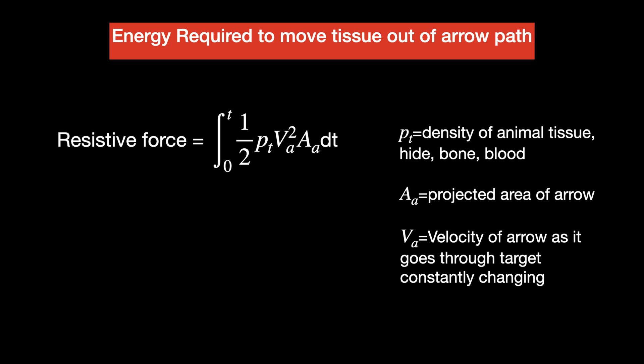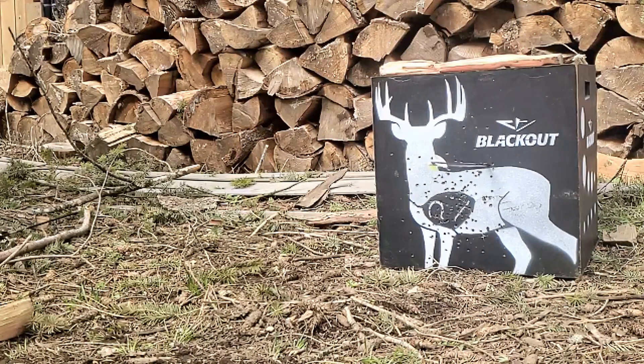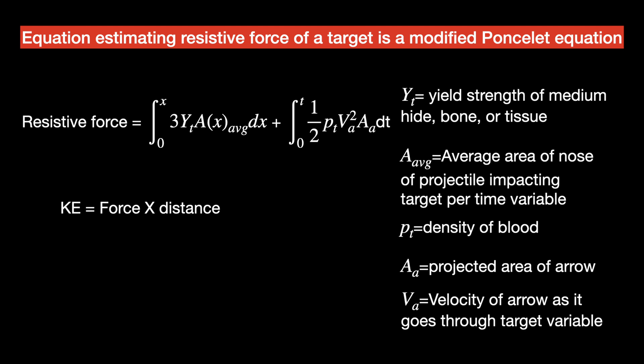The third term from the Poncelet equation is friction, which in this case isn't applied because tissue — although it may close down on an arrow — is very well lubricated, so it provides very minimal friction on the shaft. This is why in some tests, when penetrating mediums that provide a lot of friction, the friction component becomes overwhelming to the rest of the equation, and what you're really testing is how much friction is applied to stop the arrow.